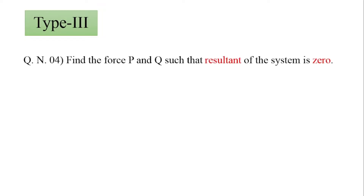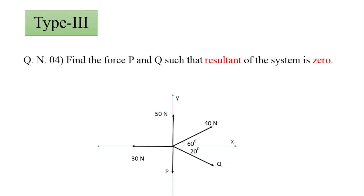Hello everyone, welcome back to our channel. Today we will see a type three numerical problem. We are solving a problem based on the concurrent force system. The question is: find the forces P and Q such that the resultant of the system is zero. The given question consists of force 1, force 2, force 3, force 4, and force 5.